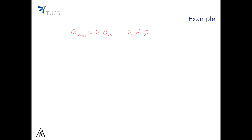To look for its equilibrium points, we have to solve the equation x equals r times x. In other words, this is the same as saying (1 minus r) times x equals 0. We have two different cases. If r is different than 1, then x equals 0 is the only equilibrium point.